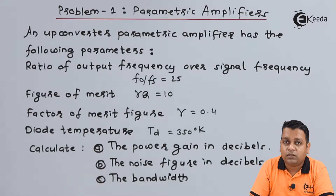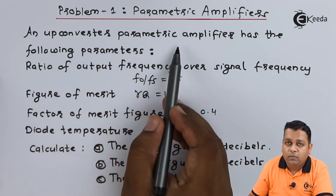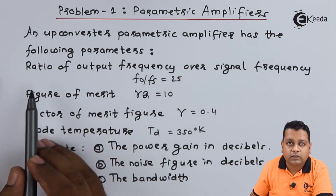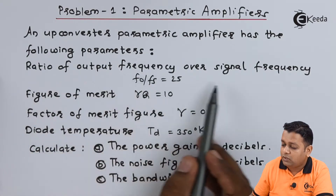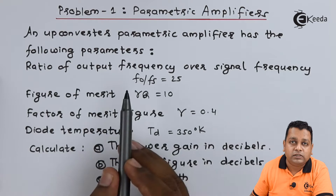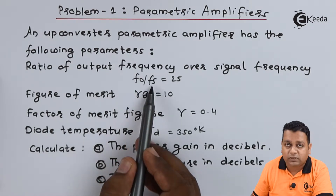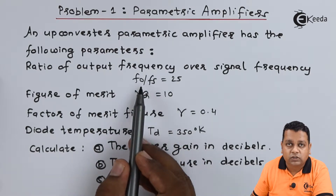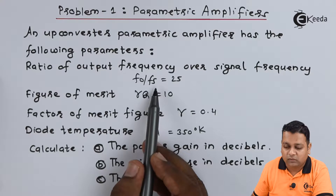Here we are provided with the problem statement. An upconverter parametric amplifier has the following parameters. The first parameter is expressed as the ratio of output frequency over signal frequency, represented as f₀ by fₛ, which is equal to 25. Here f₀ is the output frequency and fₛ is the signal frequency.